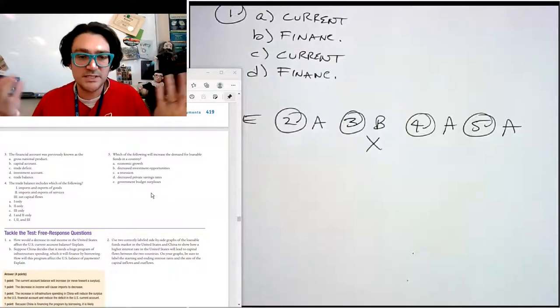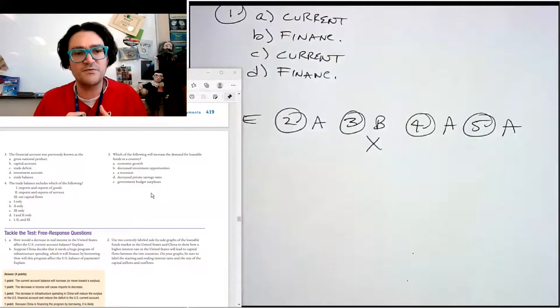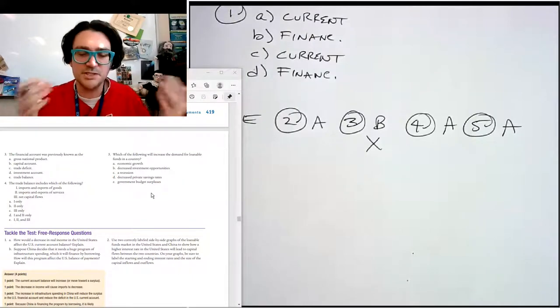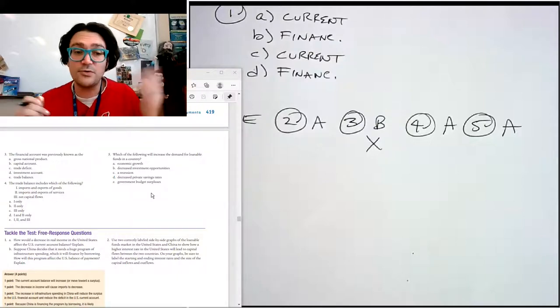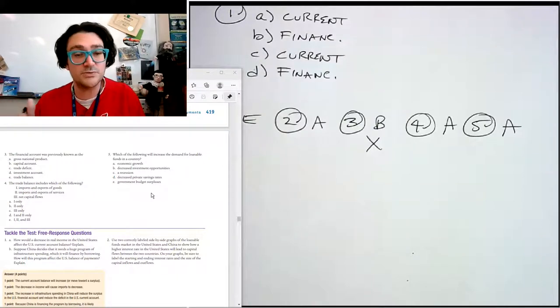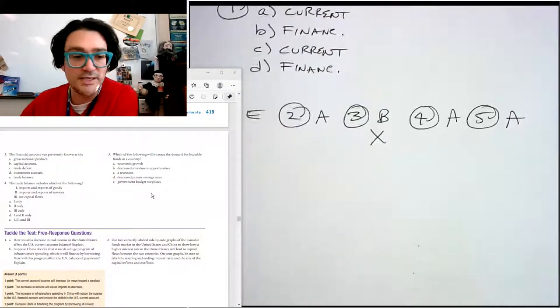The other options would either reduce demand or they would affect supply. So B, decreased investment opportunities would reduce the demand for loanable funds. A recession would reduce the demand for loanable funds. Decreased private saving rates would reduce the supply of loanable funds. And a government budget surplus would actually reduce the demand for loanable funds.